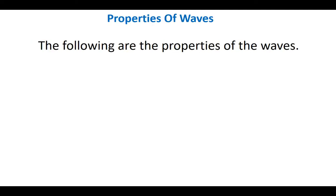Now, properties of waves. Note there is a difference between properties of a wave and characteristics of a wave. Characteristics refer to period, amplitude, and so on. Properties refer to what waves are capable of doing when they meet a barrier or anything that alters them.